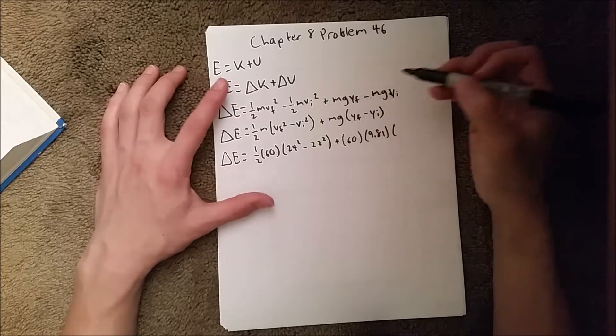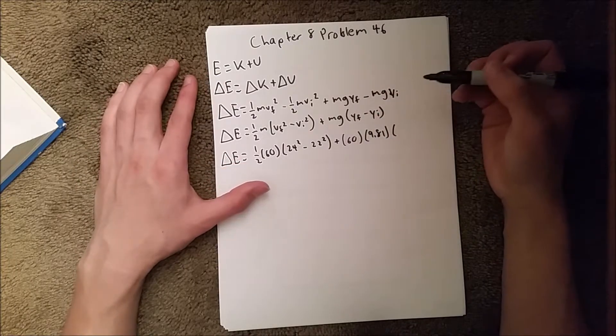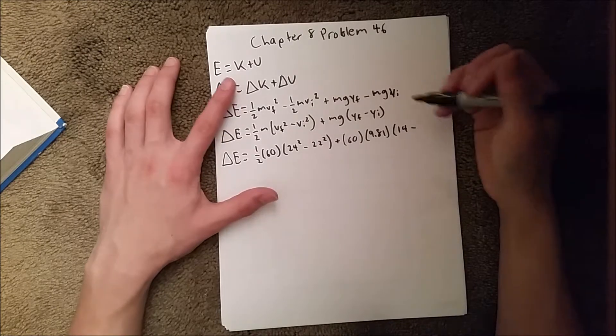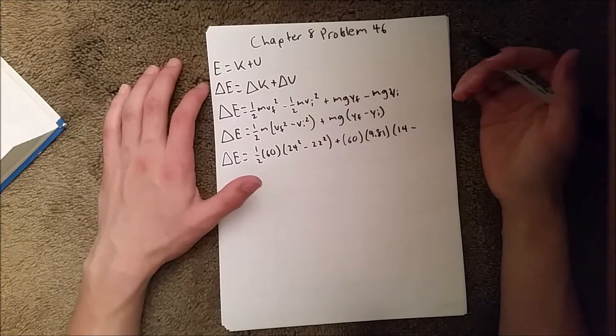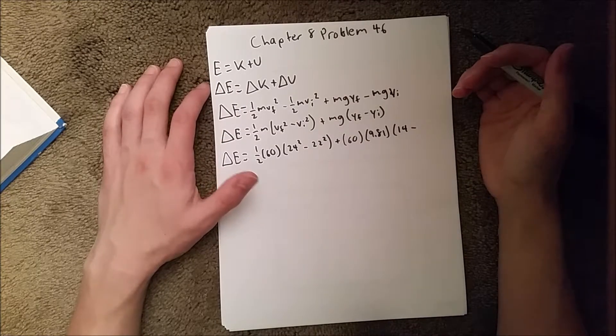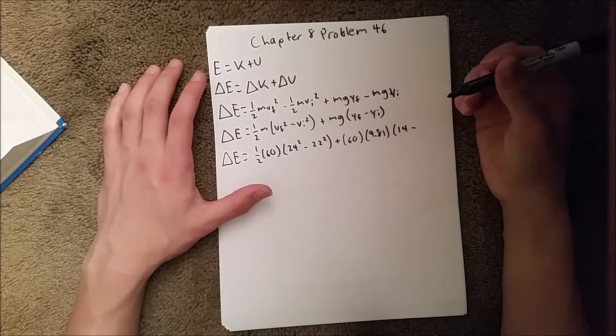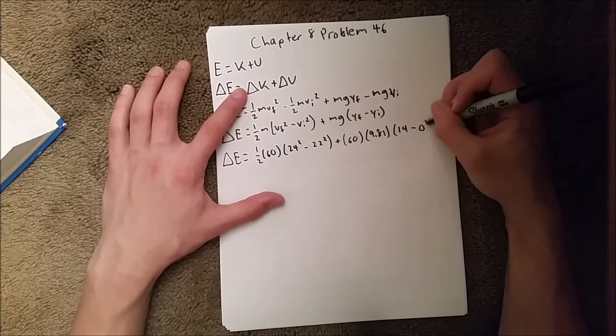We know he drops 14 meters total, so that would be our final is 14. Since it only tells us that he drops 14 meters, we have to assume that his initial is considered 0, so we're going to put a 0 there.